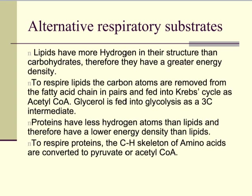Fats and lipids have a lot more hydrogens in their structure than carbohydrates, so they have a greater energy density. If you remember their structure — they're made of glycerol and three fatty acid chains, which we call a triglyceride. The carbon atoms are removed from the chain in pairs and fed into the Krebs cycle where acetyl coenzyme A would normally go in, joining oxaloacetate to form citrate.